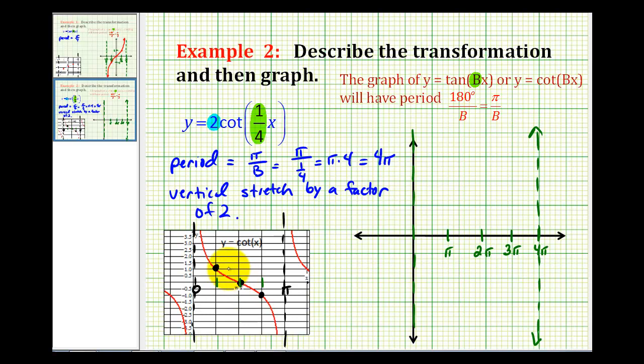And then we'll plot these three corresponding points on our transformed graph. So at this first fourth of the interval, the basic cotangent function is equal to one, but because this graph is stretched by a factor of two vertically, we'll plot that point at positive two instead of positive one. So that point would be right here.